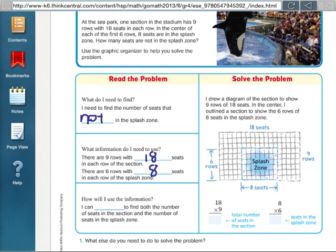How will I use this information? In other words, what kind of math? I'll multiply to find both the number of seats in the section and the number of seats in the splash zone. Over here they drew a diagram for us already.